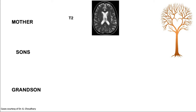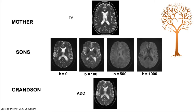When we talk about diffusion images — a concept shared by Dr. Rowley — diffusion is a family of images. T2 is the mother, DWI are the sons, and the ADC is the grandson. In order to create a DWI, you need a T2 sequence, and in order to create an ADC image, you need at least two DWIs of different B values.